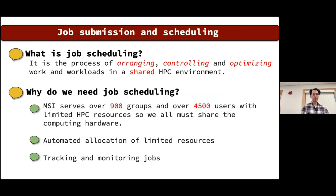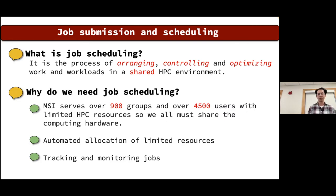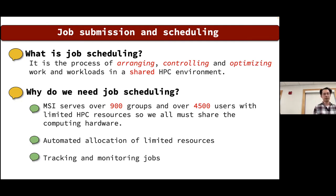What is job scheduling? It is the process of arranging, controlling, and optimizing work and workloads in a shared HPC environment. MSI serves over 900 groups and over 4,500 users with limited HPC resources. We need job scheduling to automate allocation of those limited resources so everybody gets a chance to use the clusters, and to track and monitor everybody's jobs running on HPC.